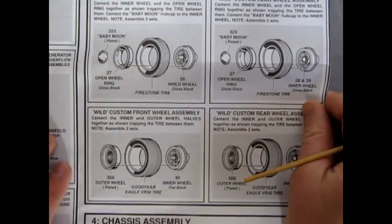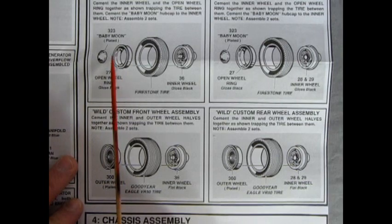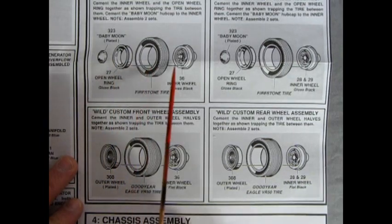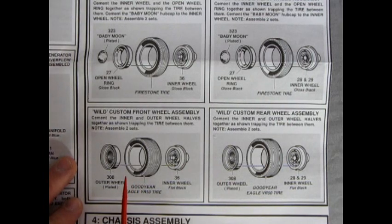Here's the mild custom front wheel assembly. You get a babymoon hubcap and open wheel ring. The Firestone tire and the wheel back. Same as for the back there.